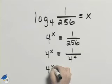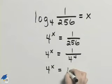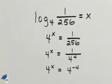We can then rewrite this as 4 to the x equals 4 to the negative 4 because 1 over 4 to the 4 and 4 to the negative 4 are equivalent.